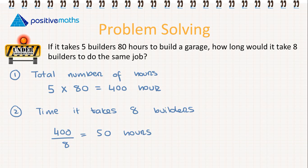So the total time then 400 divided by 8. So it will take them 50 hours. So this is a simple example of indirect proportion. When we increased the number of builders then the hours that it took to do the job decreased.